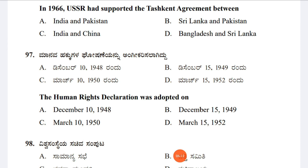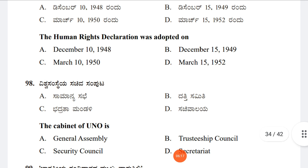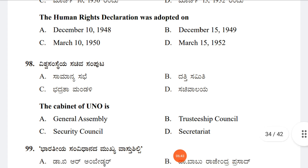Question 98: Which body of the UNO is known as its cabinet? Option A: General Assembly, Option B: Trusteeship Council, Option C: Security Council, Option D: Secretariat. The answer is Option C, Security Council, which is known as the cabinet of the UNO.